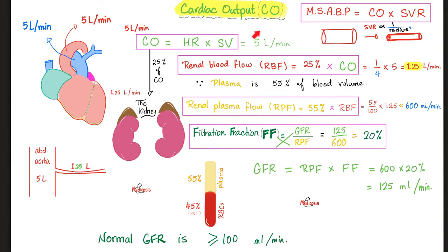The normal cardiac output is about 5 liters per minute. The kidney receives about one-fourth of the cardiac output — some textbooks say one-fifth — which is about 1 liter or 1.25 liters per minute. We only want the plasma: 55% of that is about 600 ml per minute. Not all of this gets filtered — just 20% of that, which is 125 ml per minute. That is the glomerular filtration rate, which normally should be above 100.